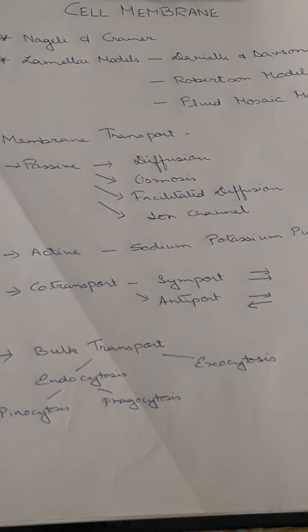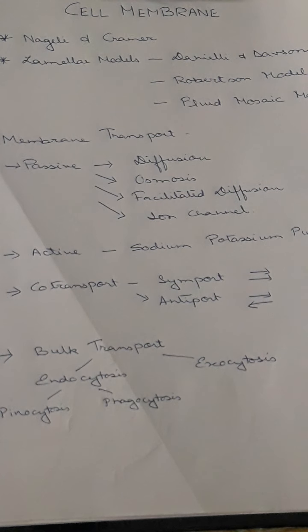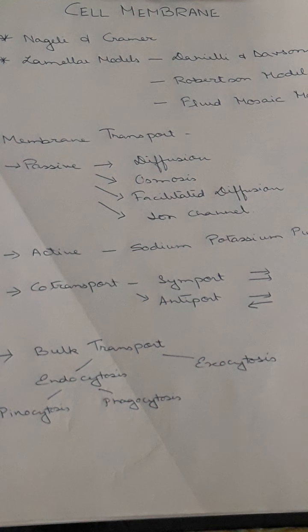After the discovery of the cell membrane, different models were put forward by different scientists to understand its structure. These models are important and are called lamellar models or sandwich models, which describe the different stable layers of the cell membrane.